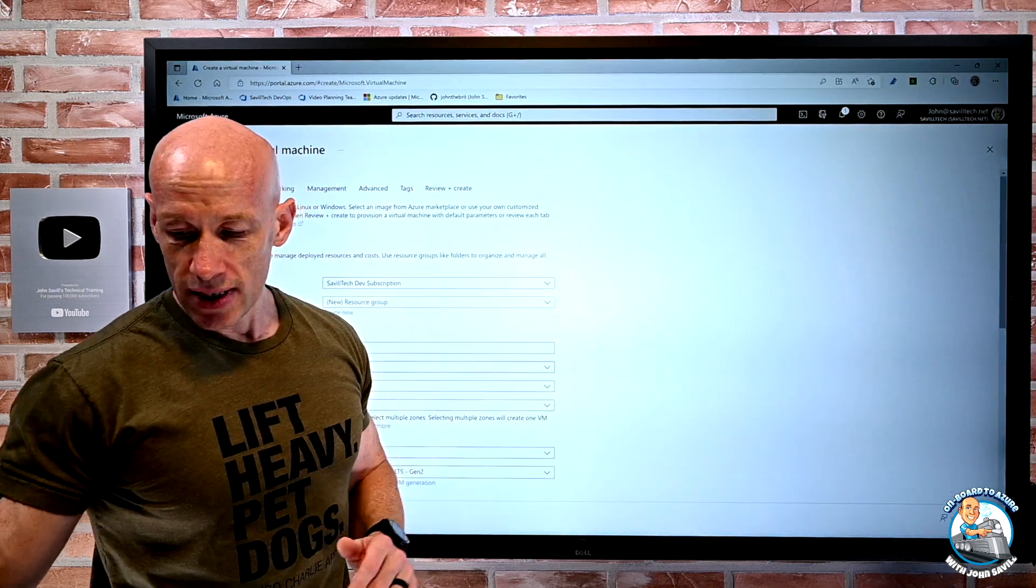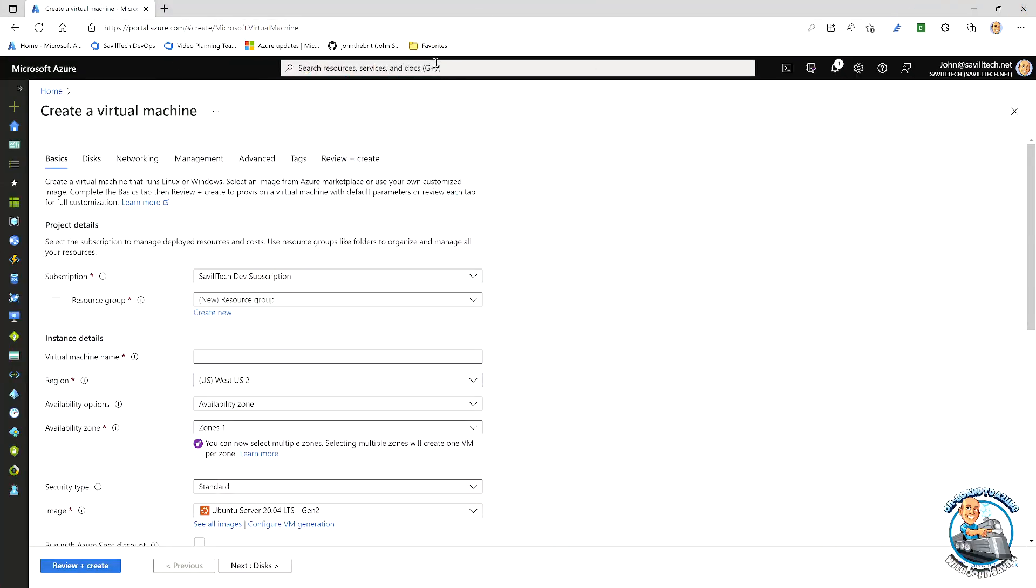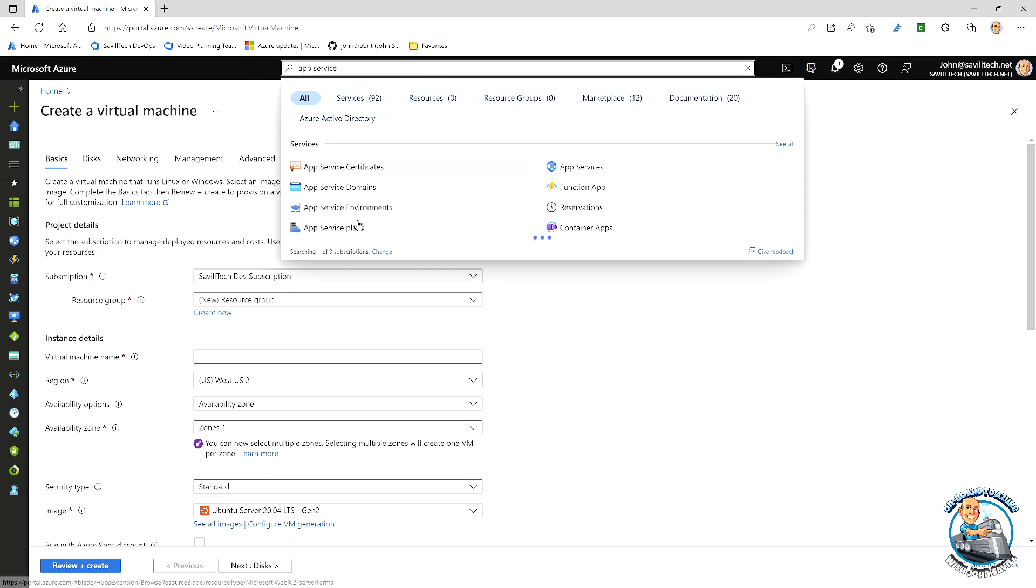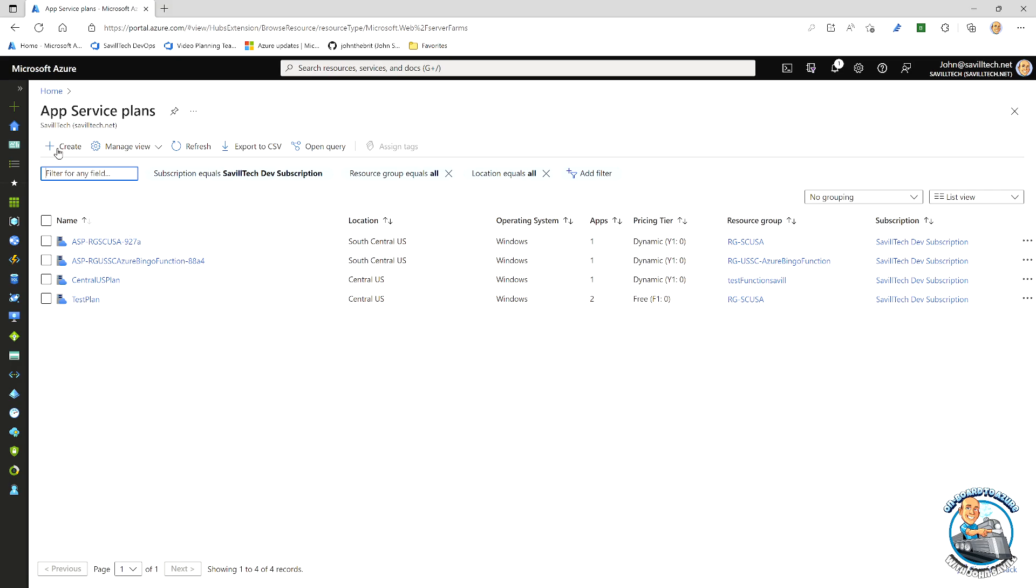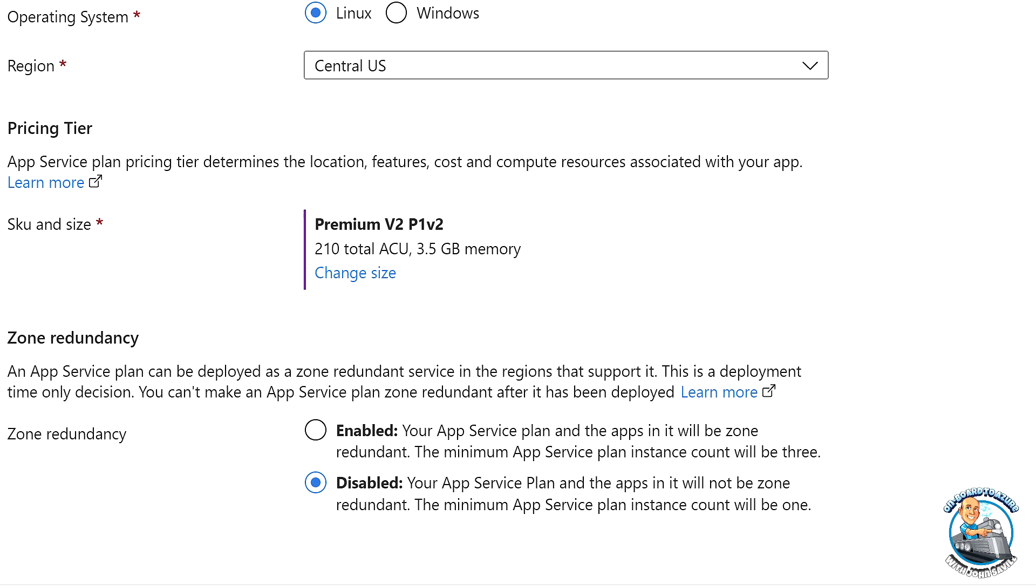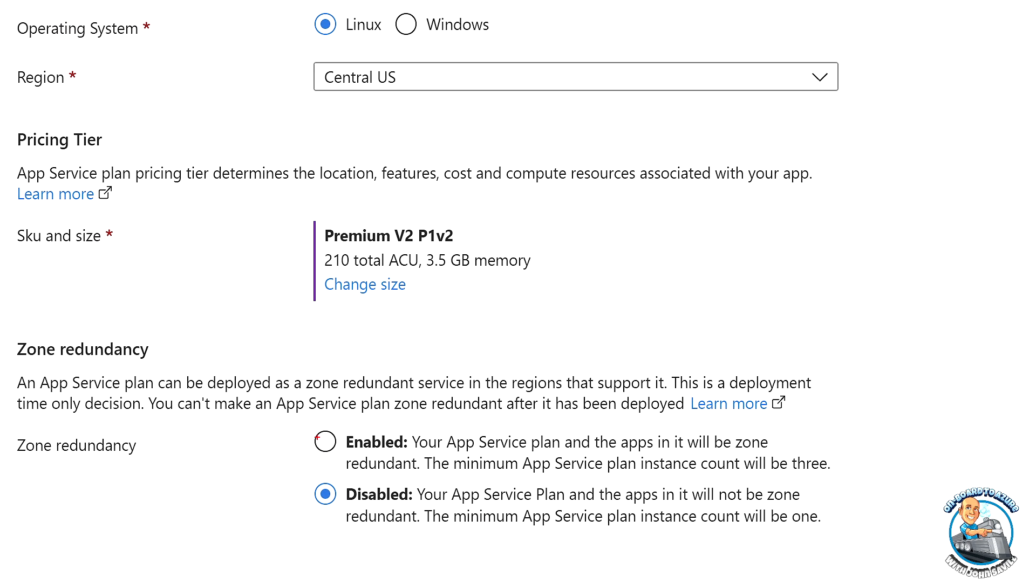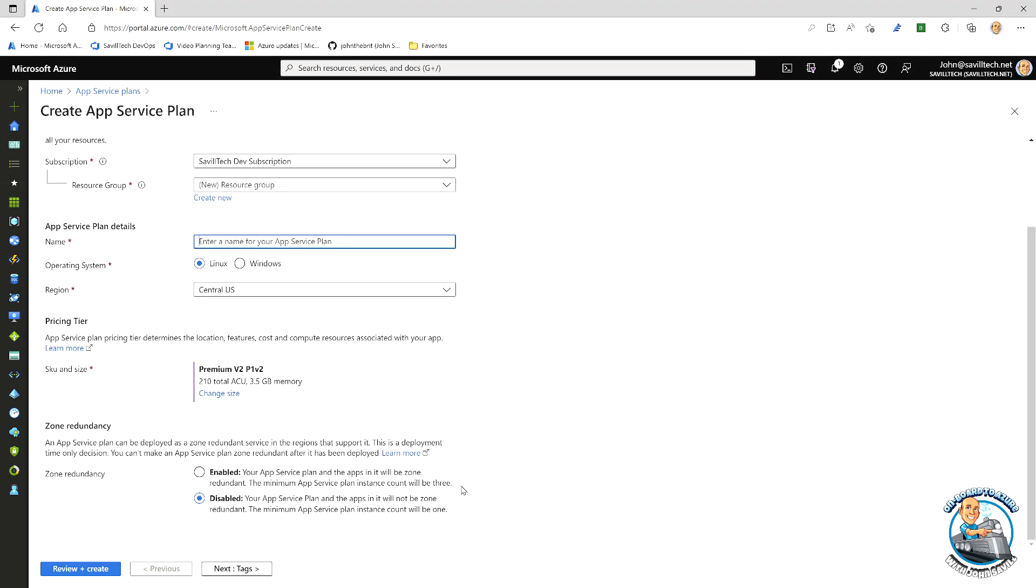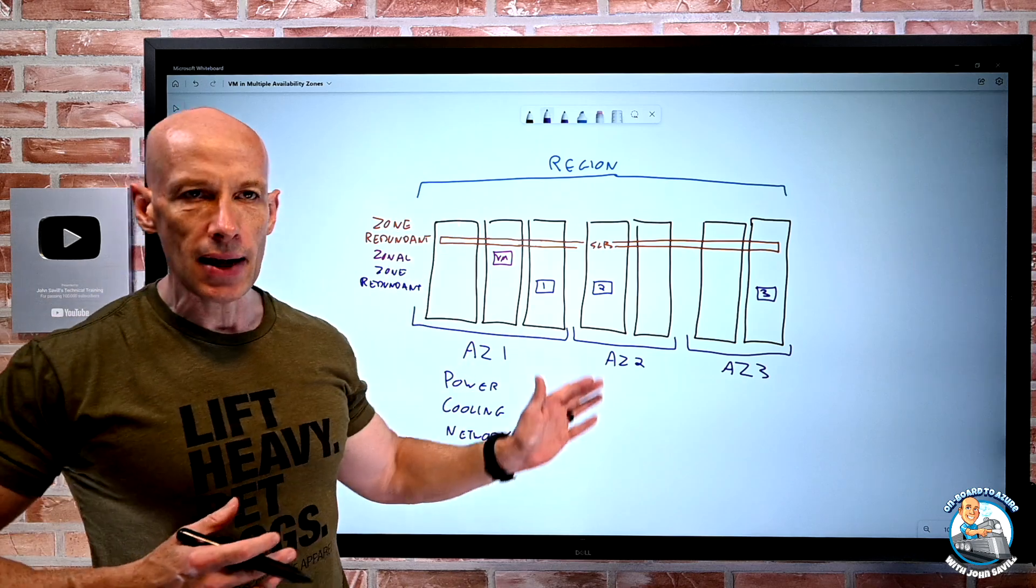And once again, we'll see that. If I just jumped over for a second to something like an app service plan that I can absolutely create as zone redundant, it's going to tell me. So I can scroll down and say, hey, look, zone redundancy is disabled. If I set it to enabled, which I can do, but notice what it says here. The minimum count will have to be three because it can't do magic. If it's disabled, hey, I can just have one. But this is the key point. Most compute services, to make them zone redundant, it's zone redundant because what it's going to do is just have instances in each of the availability zones.